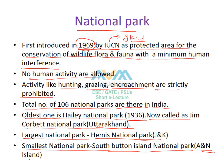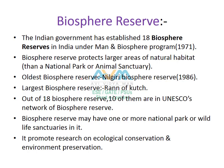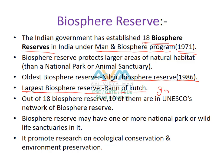The concept of biosphere reserves in India was introduced under UNESCO's Man and Biosphere Programme held in 1971. Currently there are 18 biosphere reserves in India, of which the oldest is the Nilgiri Biosphere Reserve, established in 1986. The largest biosphere reserve is the Rann of Kutch, situated in the state of Gujarat. Nilgiri Biosphere Reserve is situated on the border of three states: Kerala, Tamil Nadu, and Karnataka.